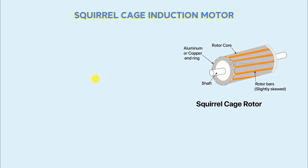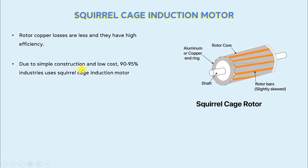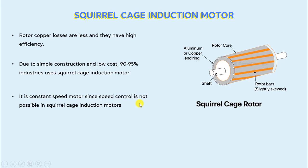Now let's discuss some of the advantages of a squirrel cage induction motor. The rotor copper losses are less in a squirrel cage induction motor and they have high efficiency. Due to simple construction and low cost, 90–95% of industries use a squirrel cage induction motor. Due to the absence of slip rings and brushes, they have simple construction and require less regular maintenance, resulting in low cost. Due to the absence of external resistance, the speed of the squirrel cage induction motor cannot be changed, so it is a constant speed motor.